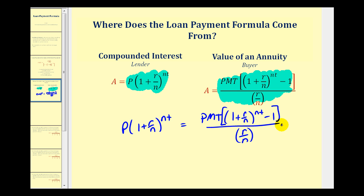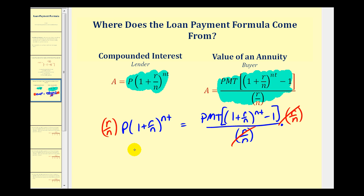Let's go ahead and multiply both sides of the equation by R over N. This simplifies nicely, giving us P times R over N.